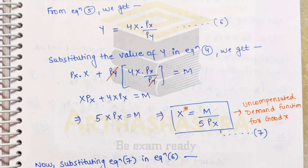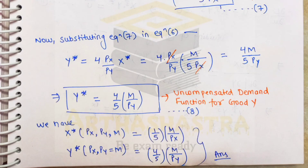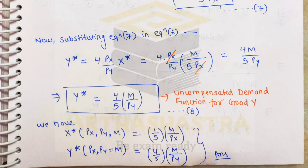We now substitute equation 7 into equation 6 to find the uncompensated demand function for good y. We have y* = 4·(px/py)·x* = 4·(px/py)·(m / 5·px). The px terms cancel, giving y* = 4m / (5·py). So we represent the uncompensated demand functions as: x*(px, py, m) = (1/5)·(m/px) and y*(px, py, m) = (4/5)·(m/py). This completes Part A.